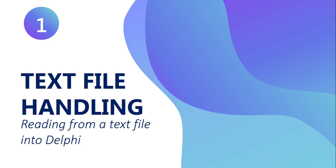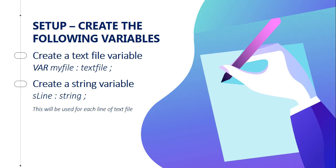Before we get into the text file and what it must look like, let's look at the recipe — the algorithm — for how we get information from a text file and get it into Delphi. For this recipe, there are seven steps, and the first step is we need to create our variables that we need to execute this algorithm.